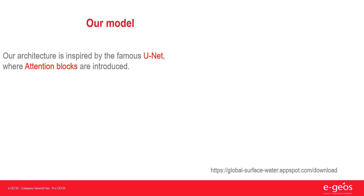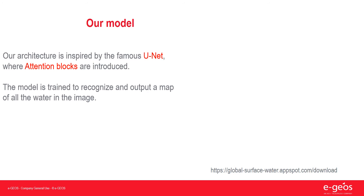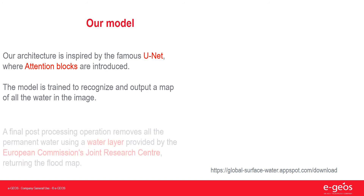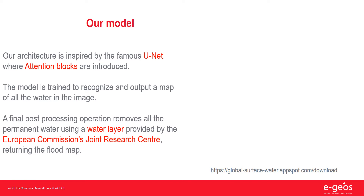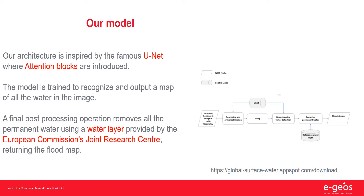Our architecture is inspired by the famous U-Net, where attention blocks are introduced. The model is trained to recognize and output a map of all the water in the image. A final post-processing operation removes all the permanent water using a water layer provided by the European Commission's Joint Research Center, returning the final flood map. On the right we can see the flow of the algorithm.